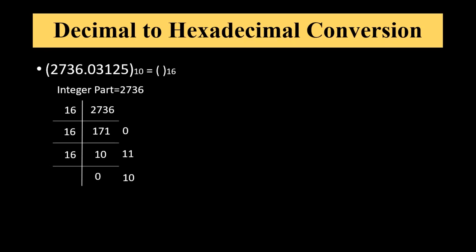In the hexadecimal number system, 0 is written as 0, 11 is written as B, and 10 is written as A. Now for getting the hexadecimal number we have to take the remainders in the reverse order as shown by the direction. So decimal number 2736 equals AB0 in the hexadecimal number system.